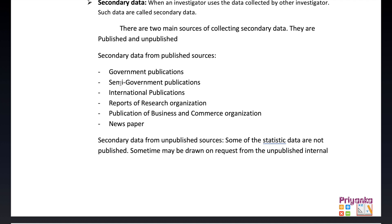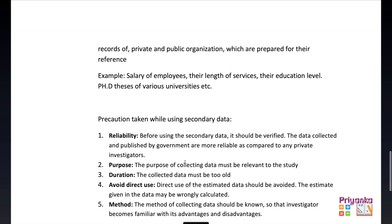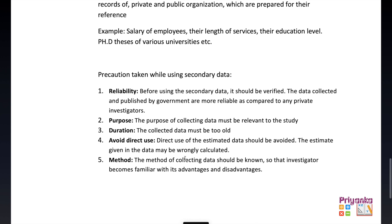Published sources of secondary data include government publications, semi-government publications, international publications, reports of research organizations, publications of business and commerce organizations, and newspapers. For unpublished sources, some statistical data are not published and may be drawn on request from the internal records of private and public organizations — for example, salary of employees, length of service, education level, or PhD theses of various universities.